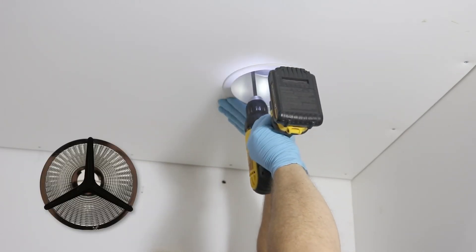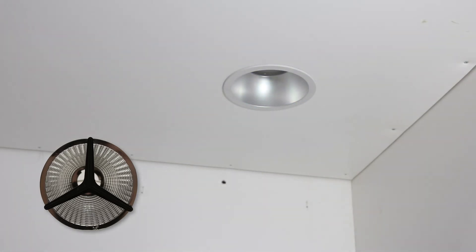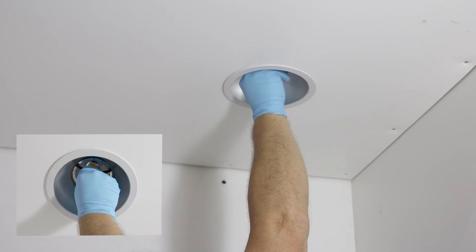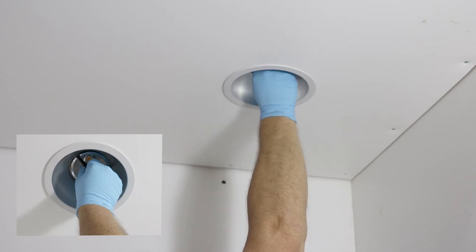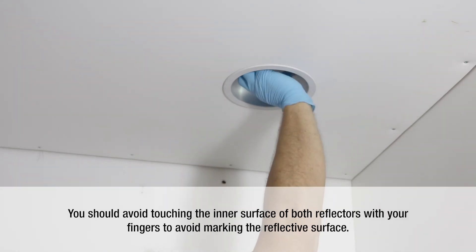The upper reflector comes with an installation tool pre-installed to protect the surface from being scratched or damaged during installation. Use this to secure the upper reflector to the engine by twisting and locking it into place. Note, you should avoid touching the inner surface of both reflectors with your fingers to avoid marking the reflective surface.